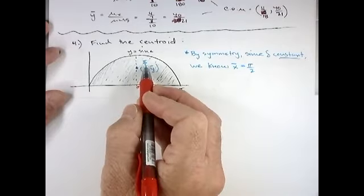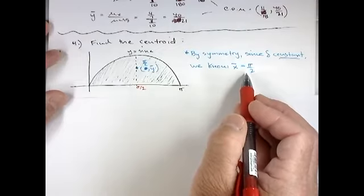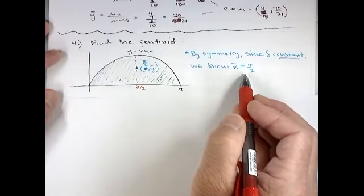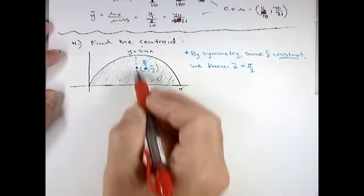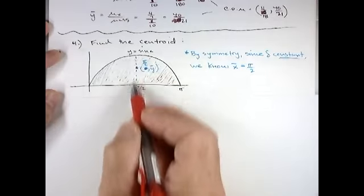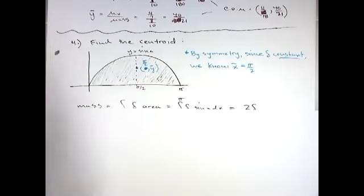So we know x̄ is going to be pi over two because our density is constant and that is allowed. You don't have to re-derive something that is plainly obvious, but we don't know what ȳ would be, how high would the center of mass be along pi over two.